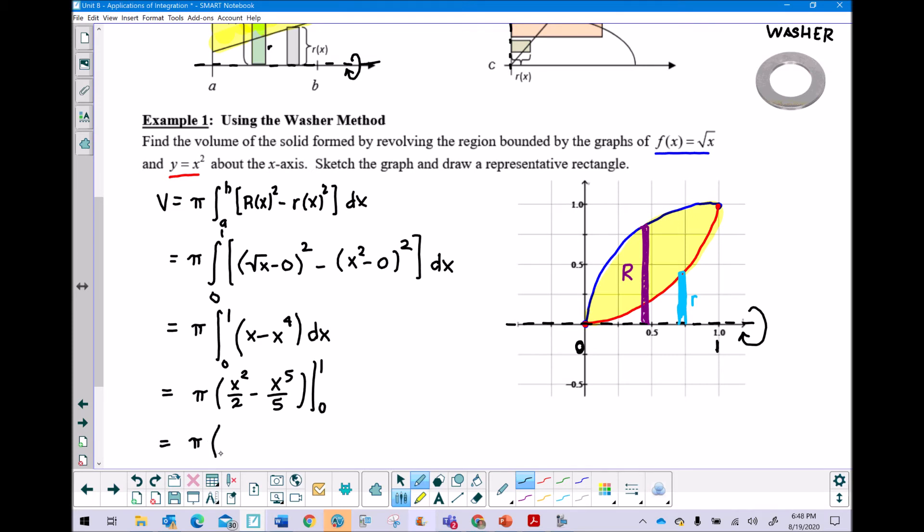Pi out in front, and then if we go ahead and plug in our one we have one half minus one fifth, and then of course if we were to plug in the minus zero we're not going to get anything of significance.